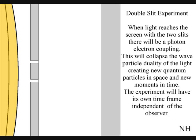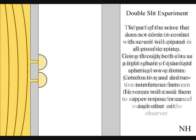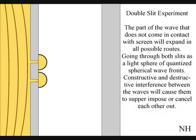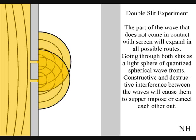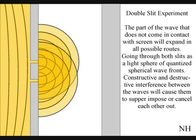The light waves that come in contact with the plate with the two slits will collapse into new photons, forming new photon-electron couplings or dipole moments as the future unfolds. The light waves that do not come in contact with the plate will go through both slits.